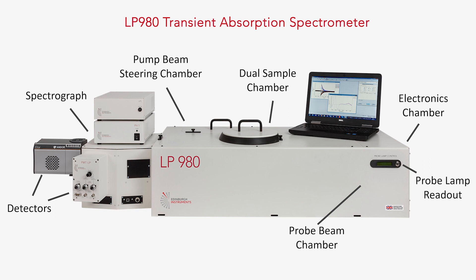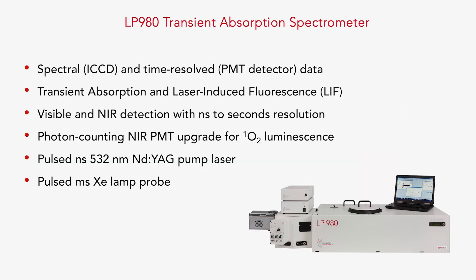In this investigation, we use the LP980 transient absorption spectrometer. This is a turnkey instrument for transient absorption and laser-induced fluorescence in the range of nanoseconds to seconds. The LP980 features an ICCD detector for spectral data and a PMT detector for time-resolved data. In this study, we used a photon-counting NIR-PMT in the detection arm of the spectrometer to measure singlet oxygen luminescence. The pump laser was a pulsed neodymium-YAG laser at 532 nanometers, and the probe was a pulsed xenon lamp.